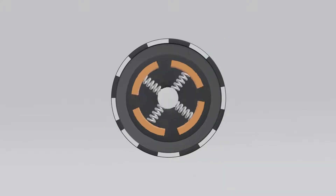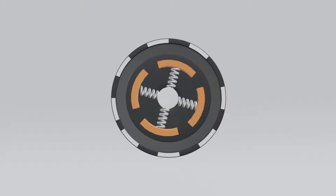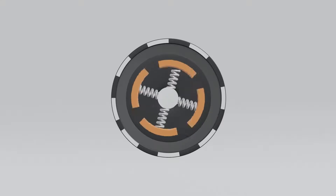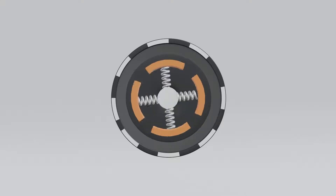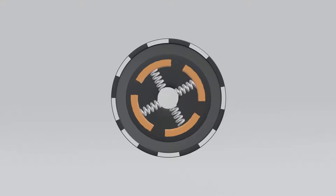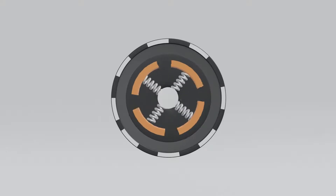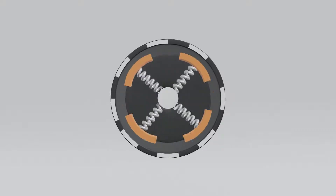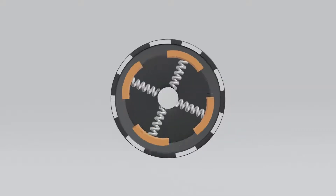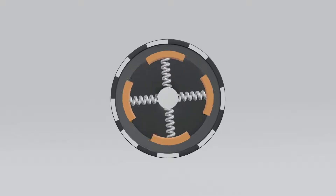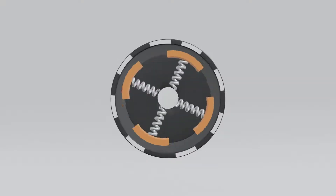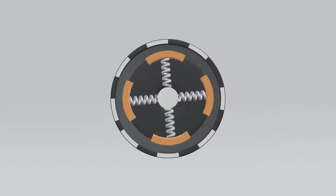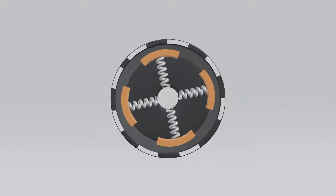Now let's see how it works. When this driving shaft rotates at low RPM, the braking pad will remain at its original place and doesn't move. But when the RPM of the driving shaft increases, due to the centrifugal force and the inertia and mass of the pad, it moves outward in the radial direction.